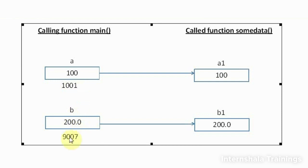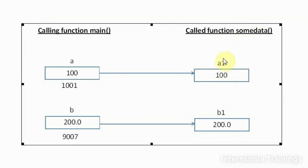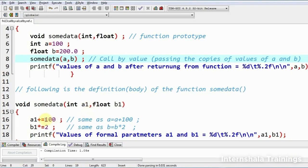Similarly, this is b, with address 9007, but we are not going to use these addresses. The value of b was 200, so its copy was passed to formal parameter b1, which is also 200. You can clearly see that a and b belong to the calling function main — they are local to main. a1 and b1 are local to the called function 'someData'. So if I make any changes into a1 or b1, they are in no way going to reflect upon the actual arguments.